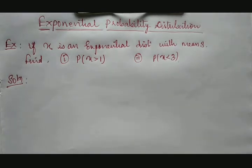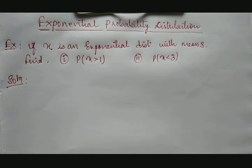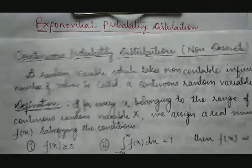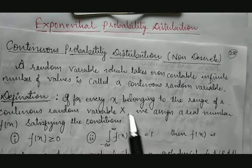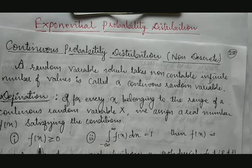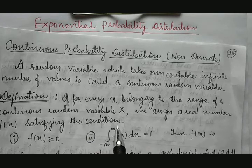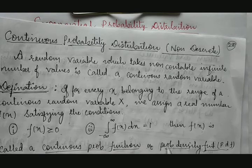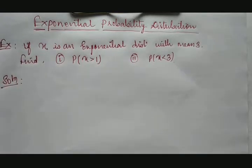As we all know, in a previous class we discussed continuous probability distribution and understood its conditions. If the continuous probability distribution satisfies two conditions — one is f(x) must be greater than or equal to 0, and integration of f(x) between minus infinity to plus infinity must be equal to 1 — then we can say it is a continuous probability distribution, also called a probability density function.